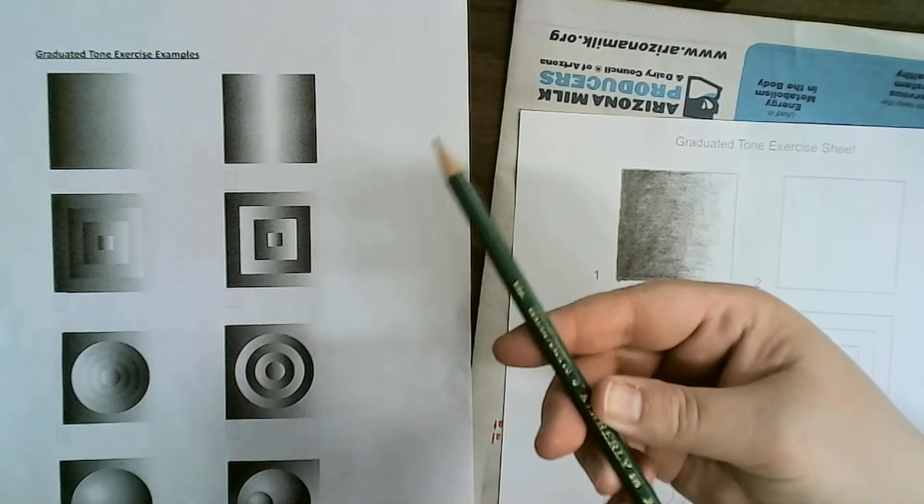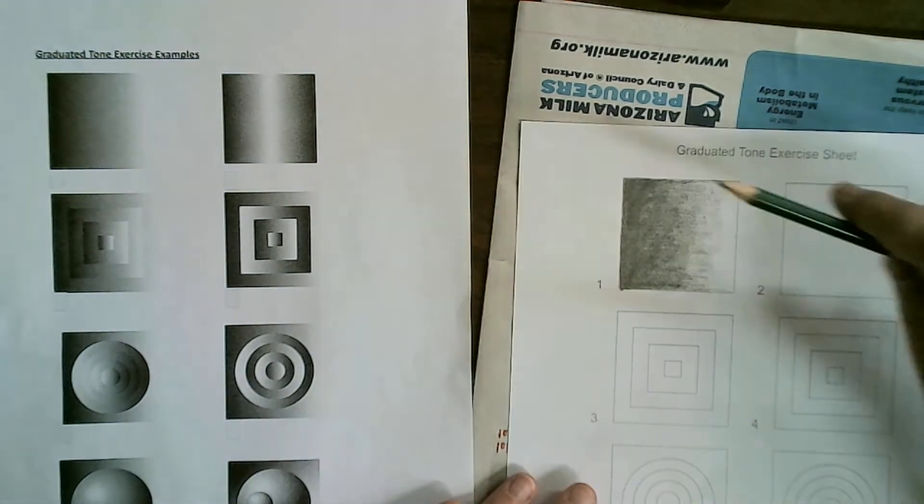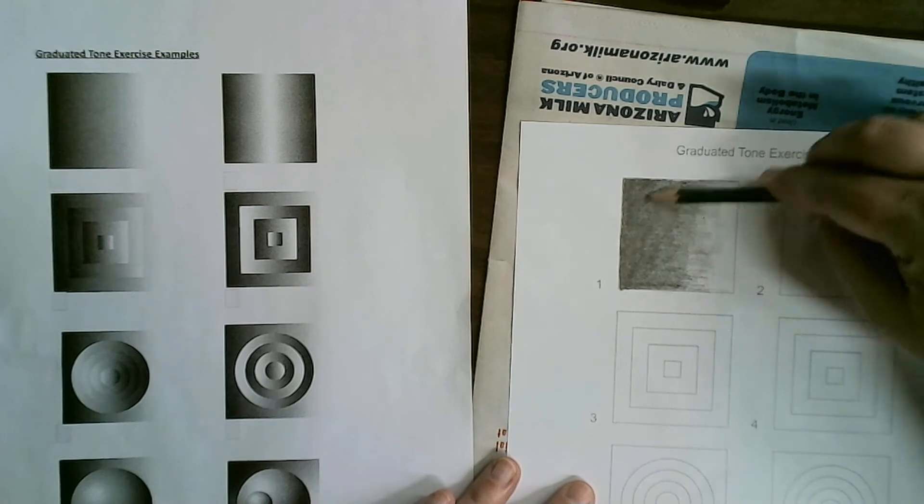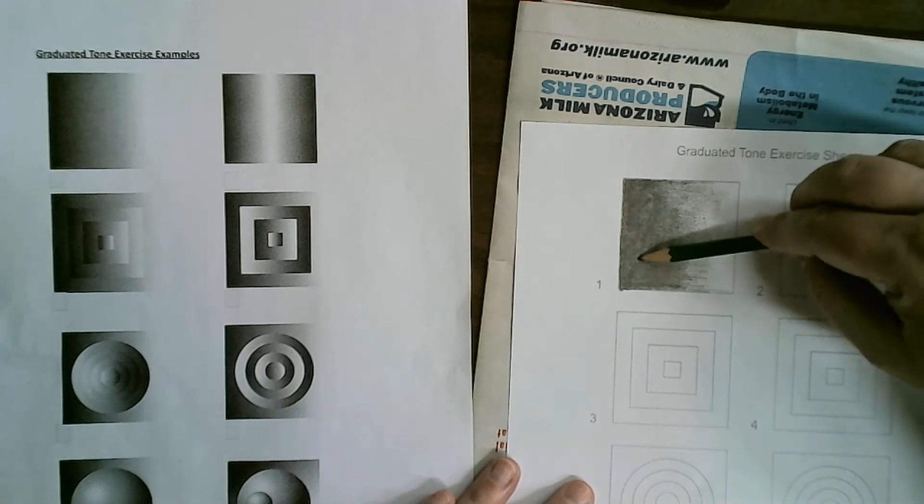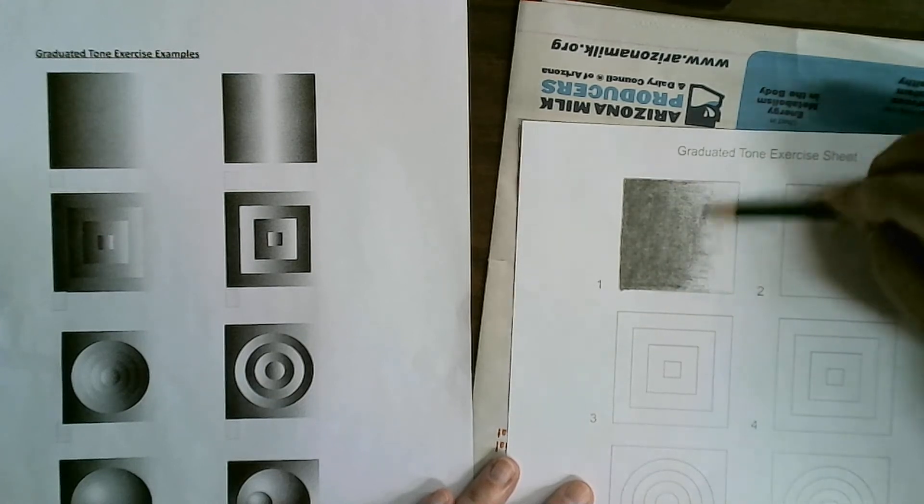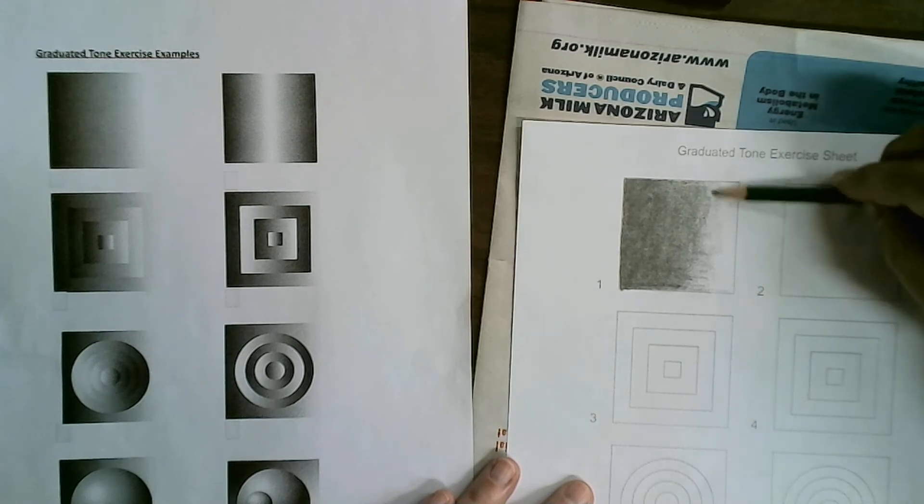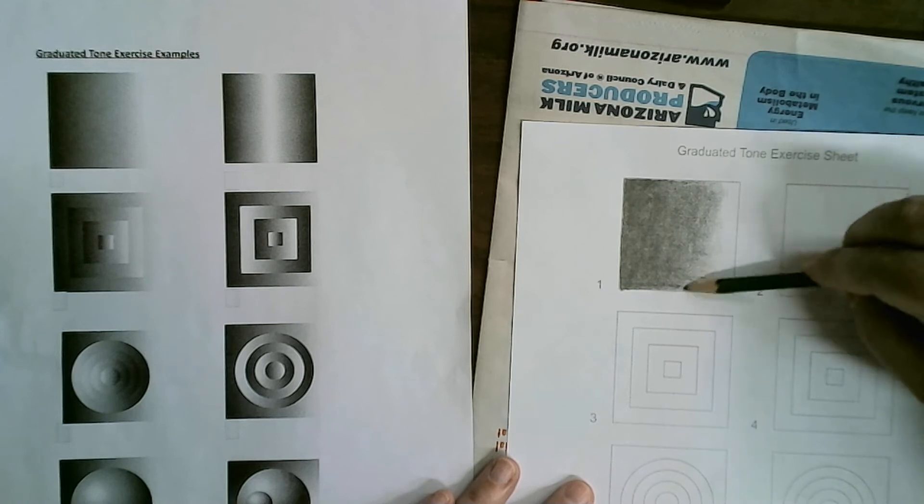Now I'm going to switch pencils. I'm going to grab my 2B pencil. The lower the number, the lighter the value. So 2B is lighter than 6B. I'm going to do a thin layer just to get my different pencils to overlap a little bit. I'm going to lighten up my pressure and I'm trying to get rid of like these lines dividing the value.